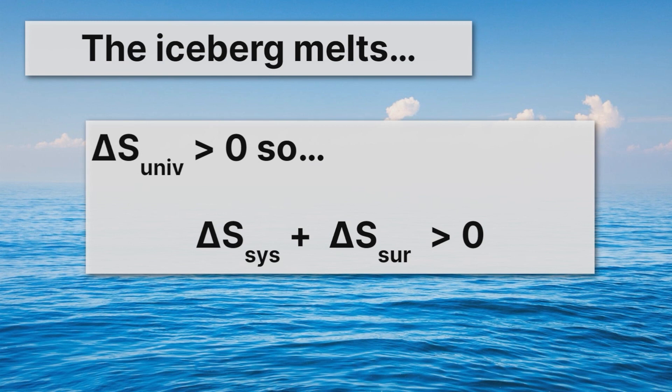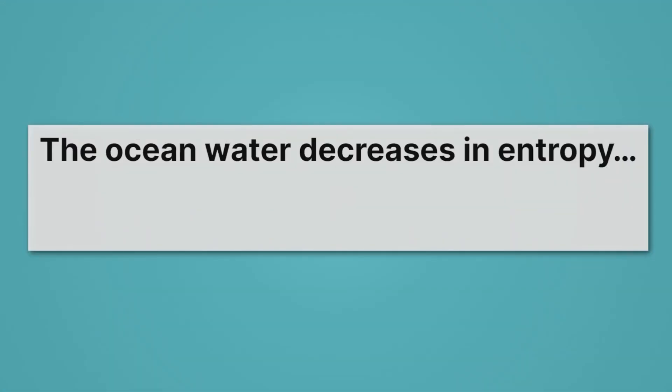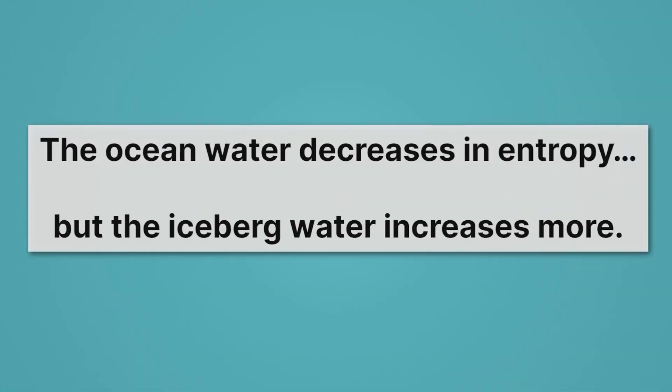So in this case, the ocean water decreases in entropy, but the iceberg water increases more. This is kind of like if you get a big paycheck today — you can still go spend some money and you're going to end up with more money than you started with. The amount of money you have is still increasing, even though you did spend some. The ocean water is decreasing in entropy, but the iceberg water increases more, so it's still following that second law of thermodynamics.